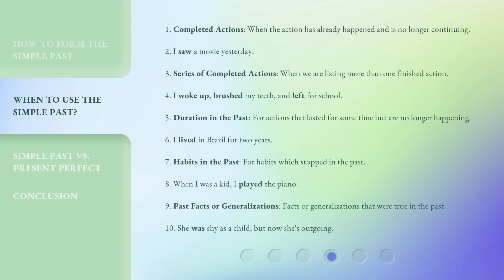The simple past has several key uses. First, completed actions — when the action has already happened and is no longer continuing: 'I saw a movie yesterday.' Second, a series of completed actions — when we are listing more than one finished action: 'I woke up, brushed my teeth, and left for school.' Third, duration in the past — for actions that lasted for some time but are no longer happening: 'I lived in Brazil for two years.'